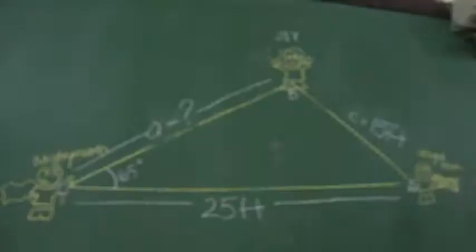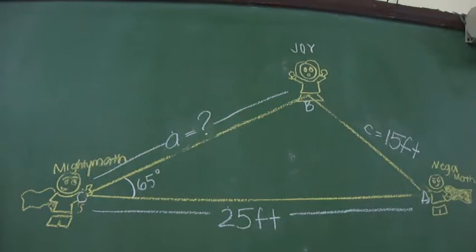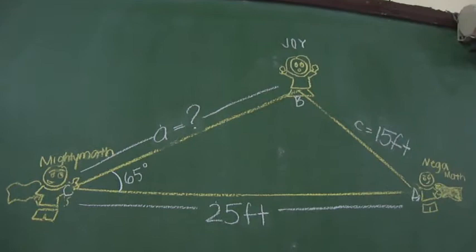Nega Math! 25 feet. Angle C is 65 degrees. Let's find how far Mighty Matt is from Joy using the law of cosine. A squared is equal to B squared plus C squared minus 2BC times cosine A.